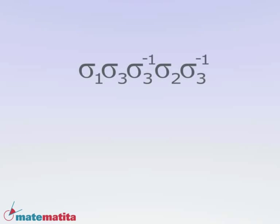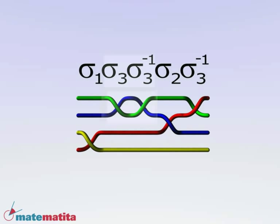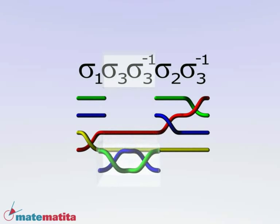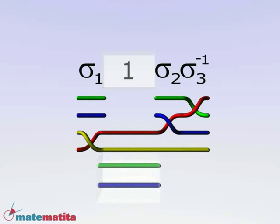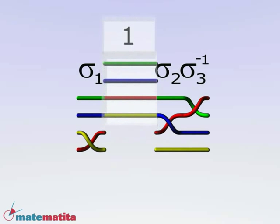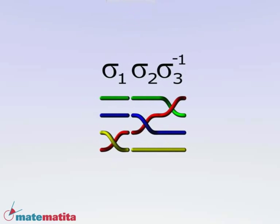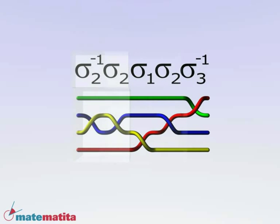Now, there are different words representing the same braid. For example, an elementary braid and its inverse cancel out when they are side by side. We can replace them by the identity braid and we can cancel out the trivial piece. Vice versa, we can insert in any place an elementary braid followed by its inverse.